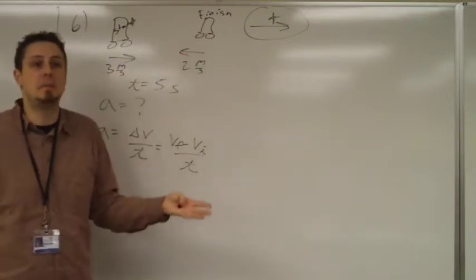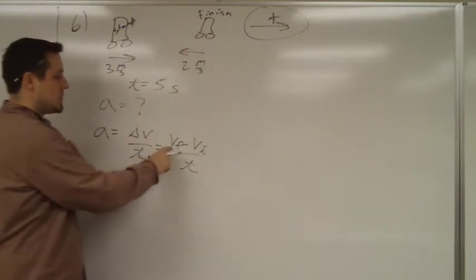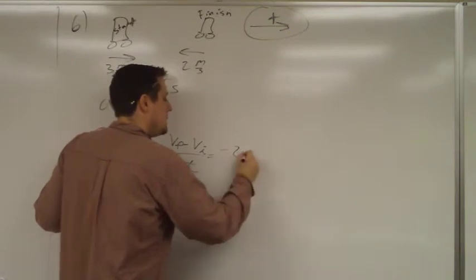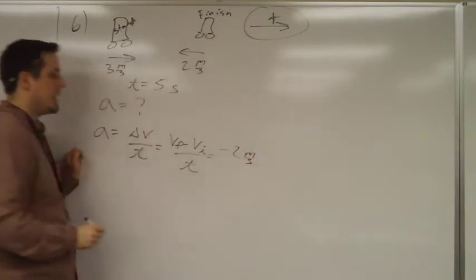If it's not positive, it has to be negative. Simple as that. So we're going to put in a negative 2 meters per second.